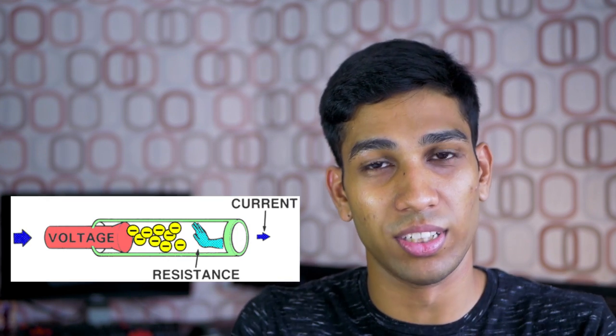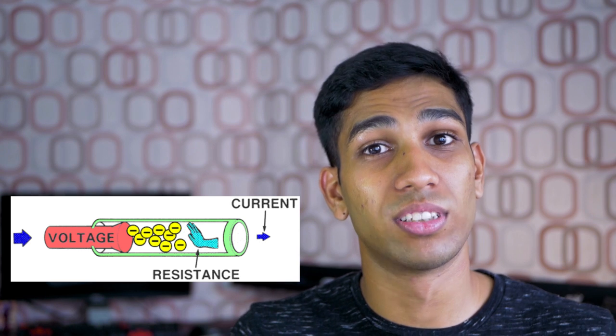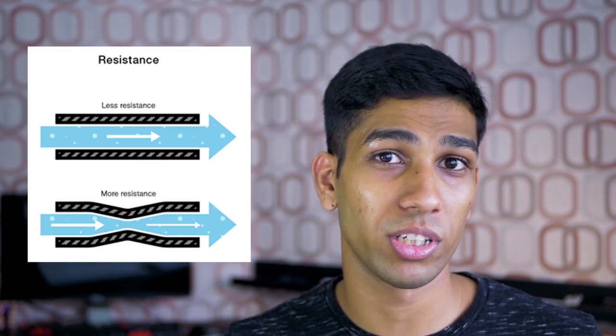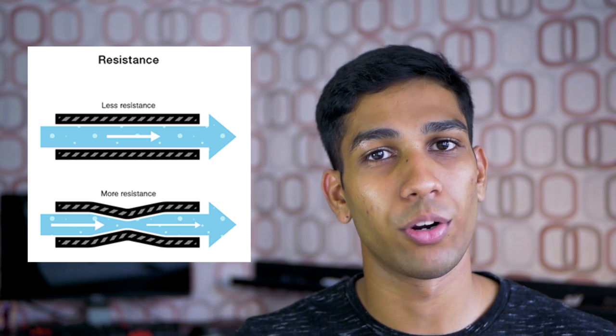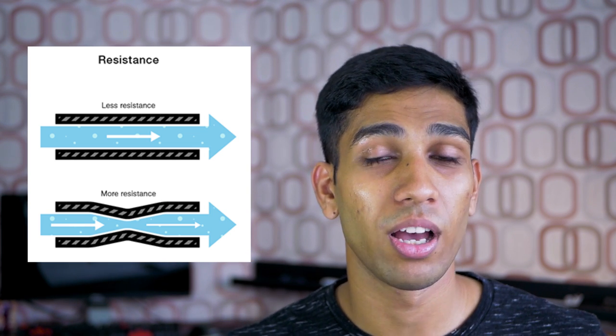If you want to think about resistors, we should look at the name. As the name implies, resistors resist electricity — more specifically, they resist the flow of electrons. If you think of electricity as water, you can think of a resistor as a clog inside a water pipe. Just like a clog would slow down the flow of water, a resistor also slows down the flow of electrons.